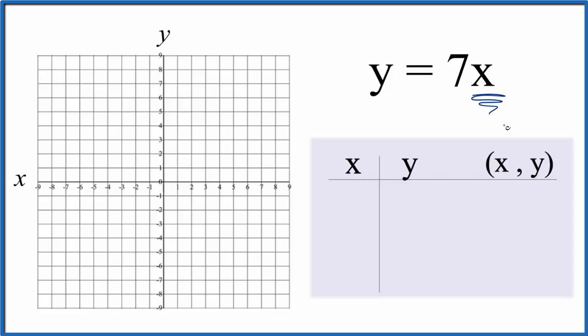So let's start with x. Let's put 0 in for x. 7 times 0, that's 0. How about 1? 7 times 1 is 7, and we could put negative 1 in. Negative 1 times 7, that's negative 7.